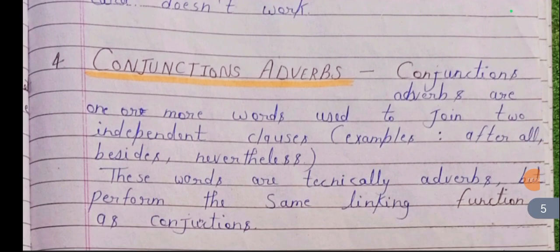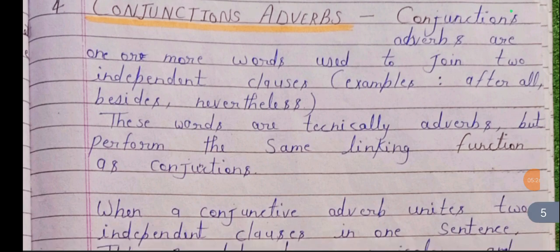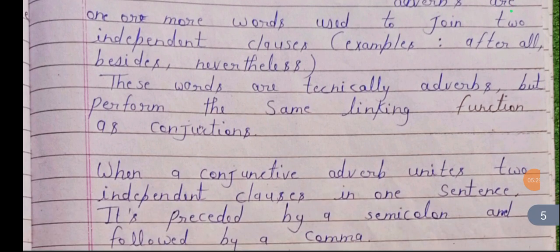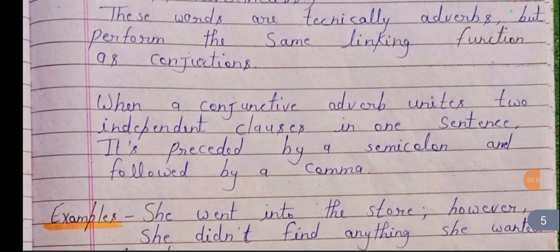Fourth is conjunctive adverbs. Conjunctive adverbs are one or more words used to join two independent clauses. Words like 'after all,' 'besides,' 'nevertheless' are technically adverbs but perform the same linking function as conjunctions. When a conjunctive adverb unites two independent clauses in one sentence, it is preceded by a semicolon and followed by a comma.